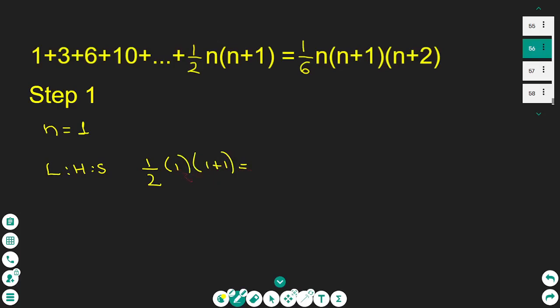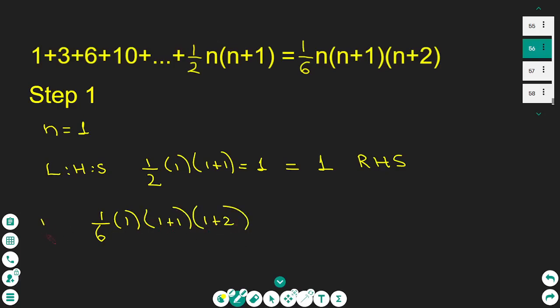This gives you a value of 1, which is exactly the same as the right hand side. Because 1 over 6 times 1 times (1+1) times (1+2), this is the right hand side, gives you 1. So we have proved that the formula works when n takes a value of 1. So the formula is true.